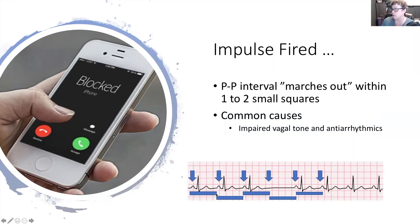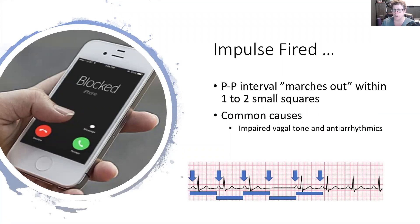These blue lines represent the entire P wave to T wave complex and how that all marches out. One of the most common causes here is vagal tone — people holding their breath or straining while trying to have a bowel movement. That can cause the SA node to reset; it sends the signal but it gets blocked as soon as they bear down.